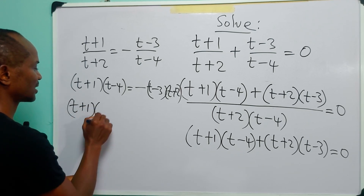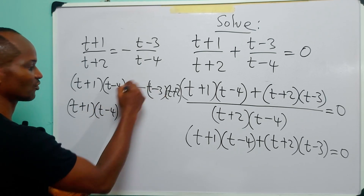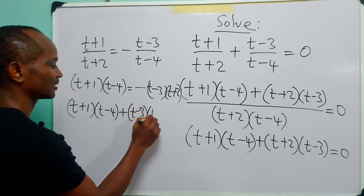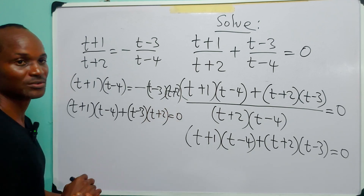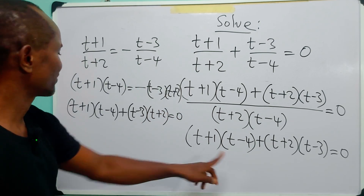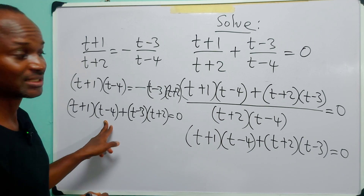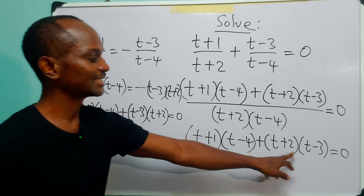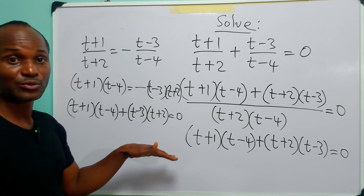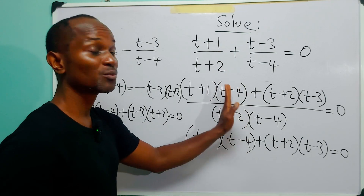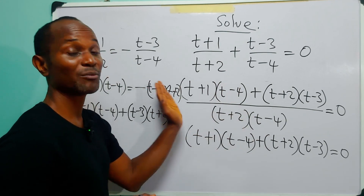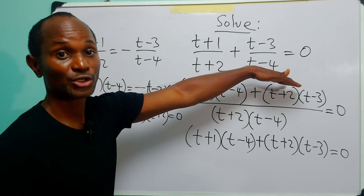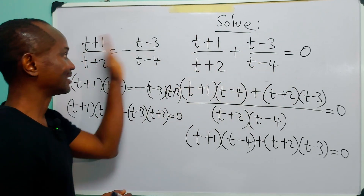Bringing this over, we have (t+1)(t-4) + (t+2)(t-3) = 0. You can see that in both cases we have exactly the same thing. So either you combine the two fractions into one unit and multiply both sides by the denominator, or you move the term to the other side of the equality sign and cross multiply.